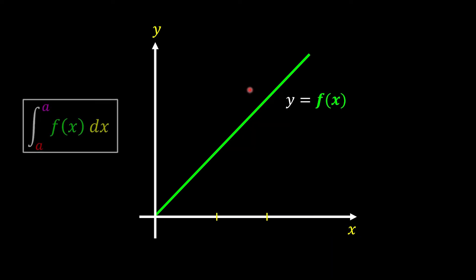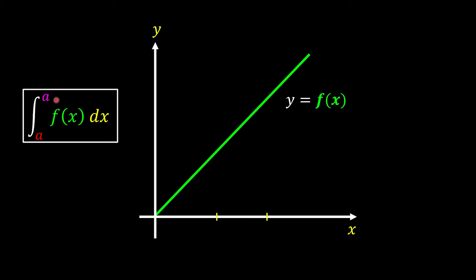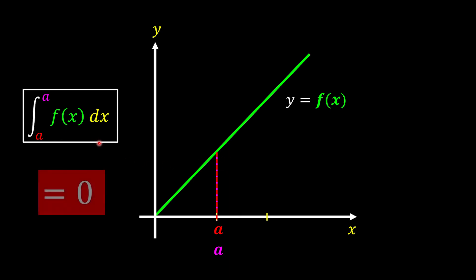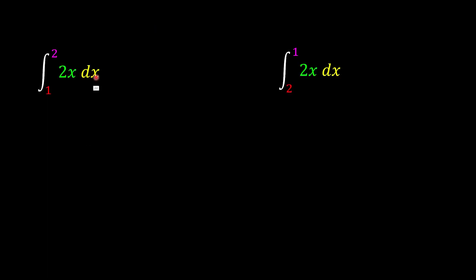If the lower limit and upper limit are exactly the same — for example both are a — then there is no area at all, so the result is 0.